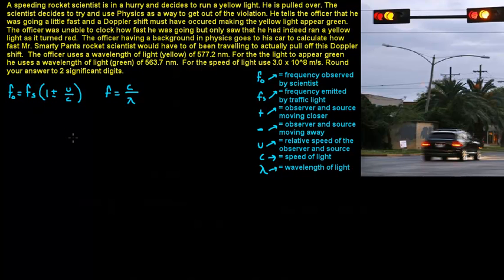Okay, so in this problem we are using these equations. For f_o, I put what I mean over here, but it is going to be the frequency observed by the scientist. So this is the frequency for the wavelength of light to appear green. f_s is going to be the actual frequency emitted by the traffic light or the source of light.